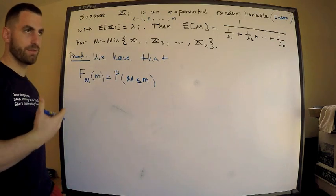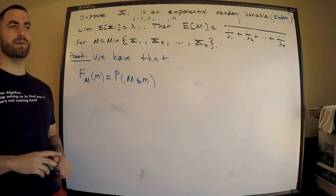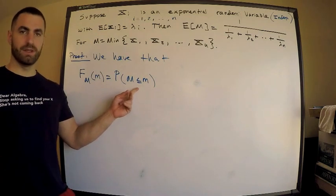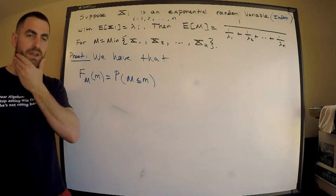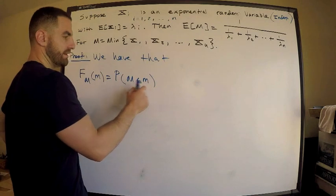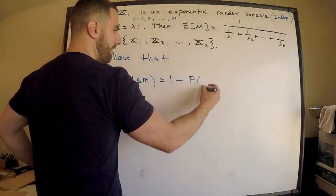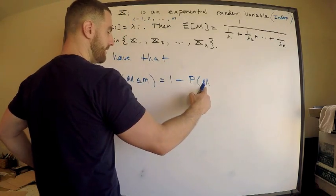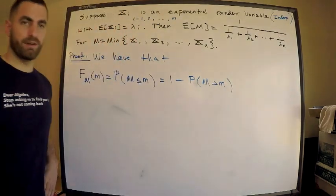If you're familiar with this sort of game regarding max and min, you know exactly what we need to do here. I cannot deal with this directly. The min is less than m says nothing valuable, but what I can say is I can write this as the complement. This is equal to 1 minus the probability that the min capital M is strictly greater than m.